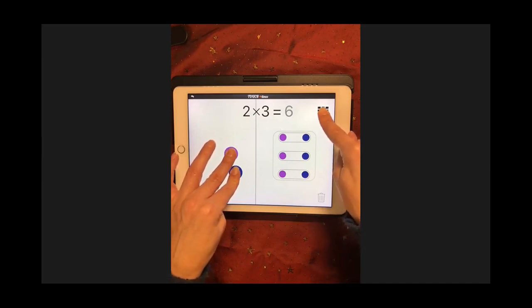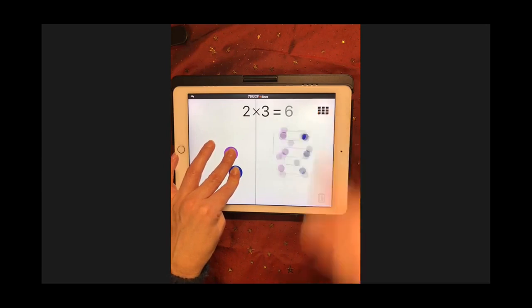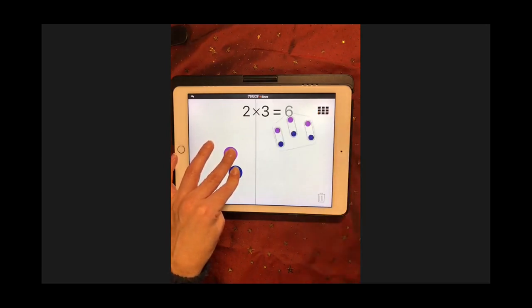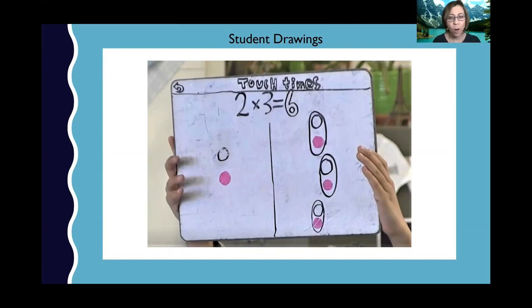So when we increase the number of pips to double the product, were we adding more groups? No. What was happening instead that caused the product to double? Asking students to draw what's on the screen also helps to draw attention to how the pips and the pods are related.